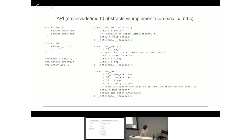On the left is essentially the API interface into the IMD, and on the right are the actual data structures within the internal implementation. We can create — on the upper left you can see the large and the small one, that's how we deal with large and small objects. It references a handle; you can create an empty IMD and add to it. On the right you can see the magic, the root offset, and then N number of entries storing the ID and size of each entry, as well as the start offset relative to the root block.